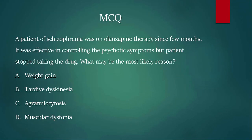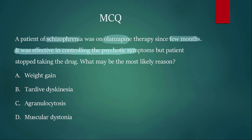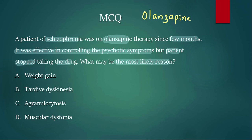Moving on to the next question: a patient with schizophrenia was on olanzapine therapy for a few months. It was effective in controlling psychotic symptoms, but the patient stopped taking the drug. What is the most likely reason? Options: weight gain; tardive dyskinesia; agranulocytosis; muscular dystonia. The patient was okay but discontinued — probably due to an adverse effect. Olanzapine belongs to atypical antipsychotics, which are known to block 5-HT2 more than D2.